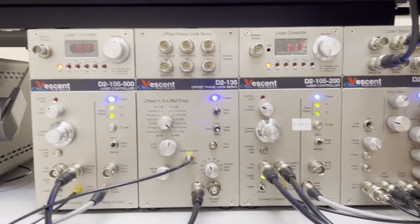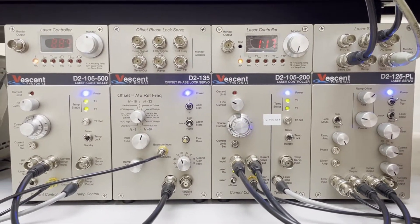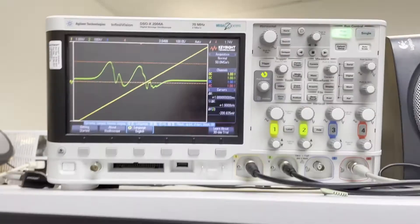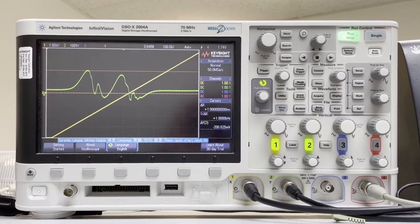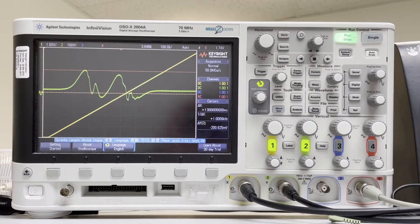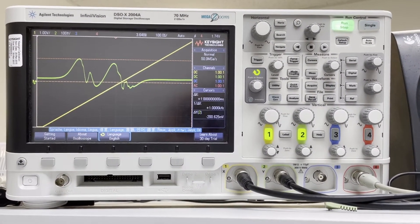So if we come back over here and we switch our system into ramp mode, we can take a look at our peak lock signal. Keep in mind, this is rubidium spectroscopy and this just looks really awful.